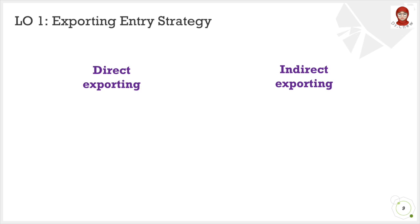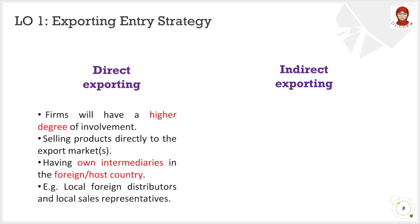There are two types under exporting, which are direct and indirect exporting. For direct exporting, firms will have a higher degree of involvement because they are selling products directly to buyers in a target market. Bear in mind that direct exporters need not sell directly to the end user, but they are responsible for getting their goods into the target market by using intermediaries in the foreign or host countries, such as local foreign distributors or sales representatives.